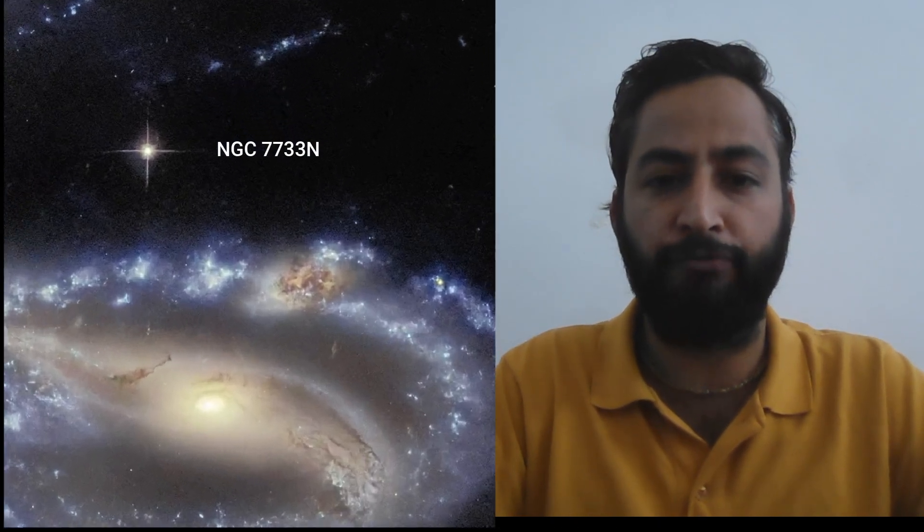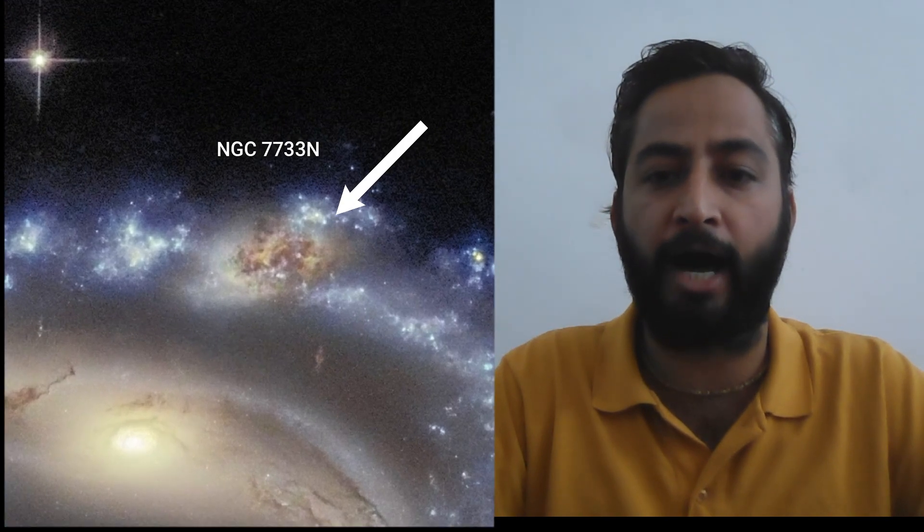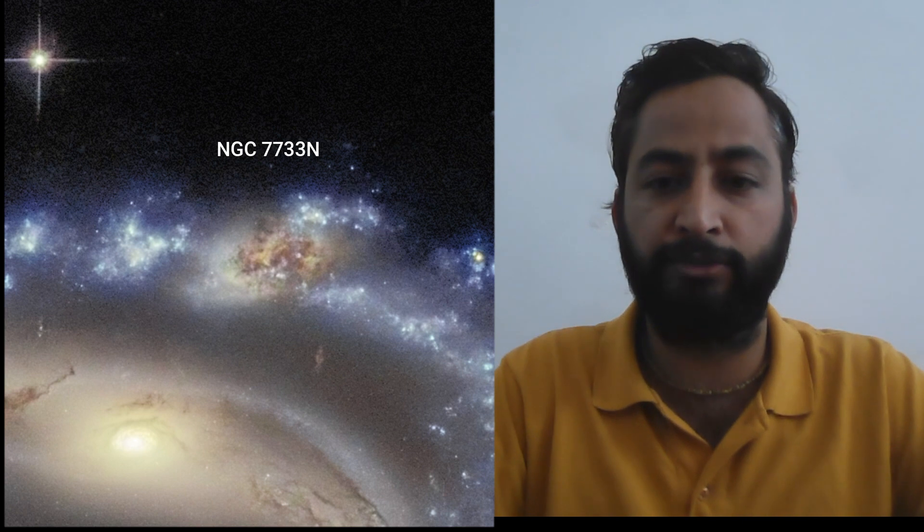The third galaxy is currently referred to as NGC 7733N and can actually be spotted in this picture if you look carefully at the upper arm of NGC 7733, where there is a visually notable knot-like structure glowing with a different color to the arm and obscured by dark dust.